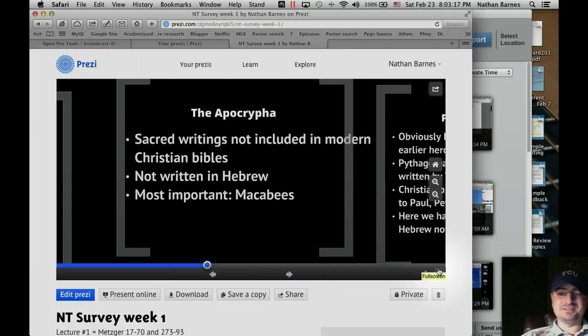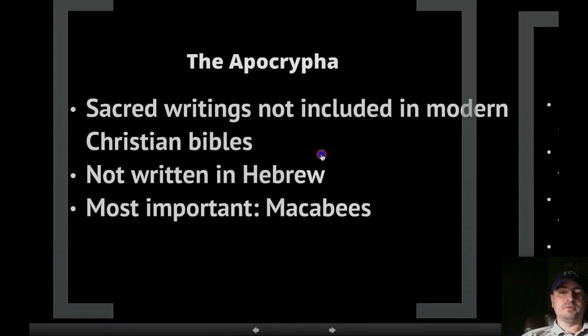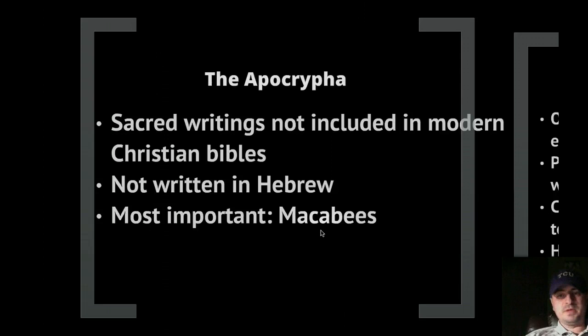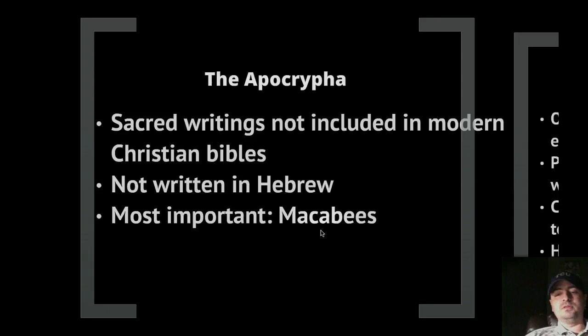The most important book in the Apocrypha is Maccabees — those are the guys that rebelled against Antiochus Epiphanes. Judas Maccabeus was the priest commanded to slay the pig, and he just started killing people — he was evidently a force to be reckoned with. He had five sons, and they kicked out the Greeks and cleansed the temple eventually. And then they started ruling just as oppressively as the Greeks did — just exchanging one tyrant for another.